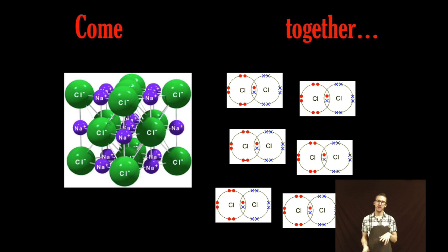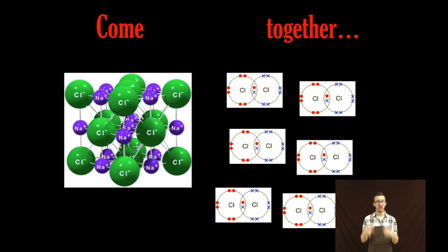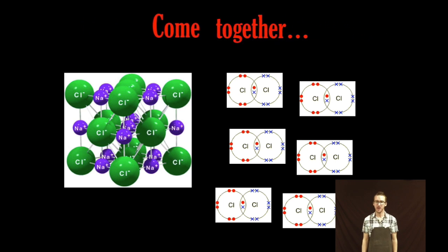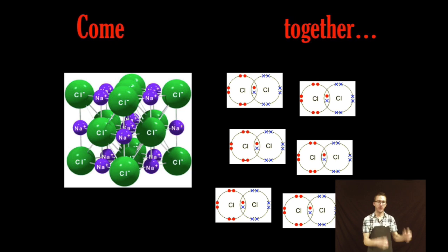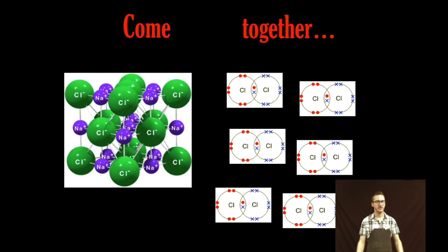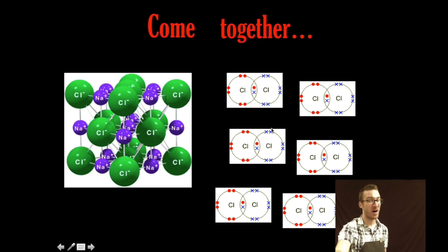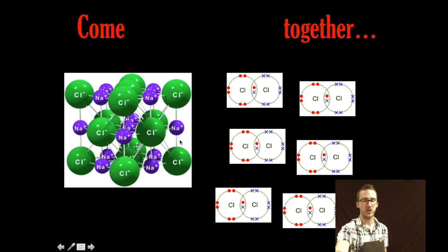As we distinguish between molecules for covalent compounds and formula units for ionic compounds, again recognize that there are discrete individual molecules with covalent compounds, whereas in the ionic compounds there is no discrete unit. The bonding is occurring in all directions, which is why we simply look for the ratio of ions to give us overall neutral charge in those ionic compounds. Basically, we don't see the bonding occur in between molecules in covalent compounds, but in ionic compounds we see that bonding occur in all directions.